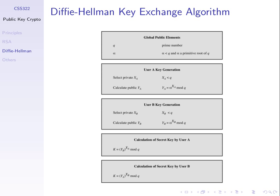There are two users, A and B. User A selects a private value XA — any number less than Q — and calculates a public value YA as alpha raised to the power of XA mod Q. User B does the same: chooses a random private XB less than Q, and calculates YB as alpha to the power of XB mod Q. Alpha and Q are the same at both users; XA and XB will be different because they're chosen independently.